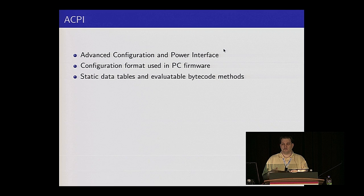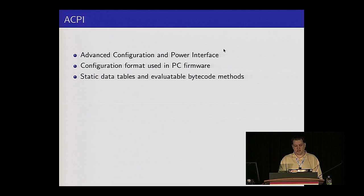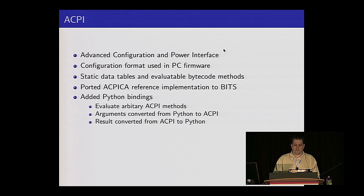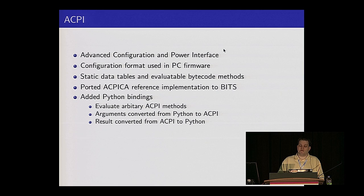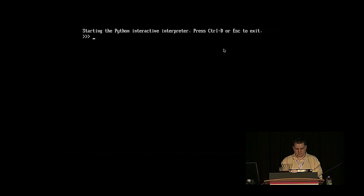Apart from that, we also wanted to talk to your actual firmware — not just the hardware, but your firmware layer. In particular there's ACPI, the Advanced Configuration Power Interface. This is what you use to find hardware on modern systems, to find out how to put your CPU or whole system to sleep. It has a bunch of static data tables as well as bytecode methods you can evaluate. And again, we wanted to drive this from Python, not from C. So we pulled in the reference implementation of ACPICA, put it in bits, handled its portability issues, and added Python bindings to it. It's possible to evaluate an arbitrary ACPI method, feed it arguments from Python, go call and interpret the bytecode method, and feed the result back to Python — no extra C code involved.